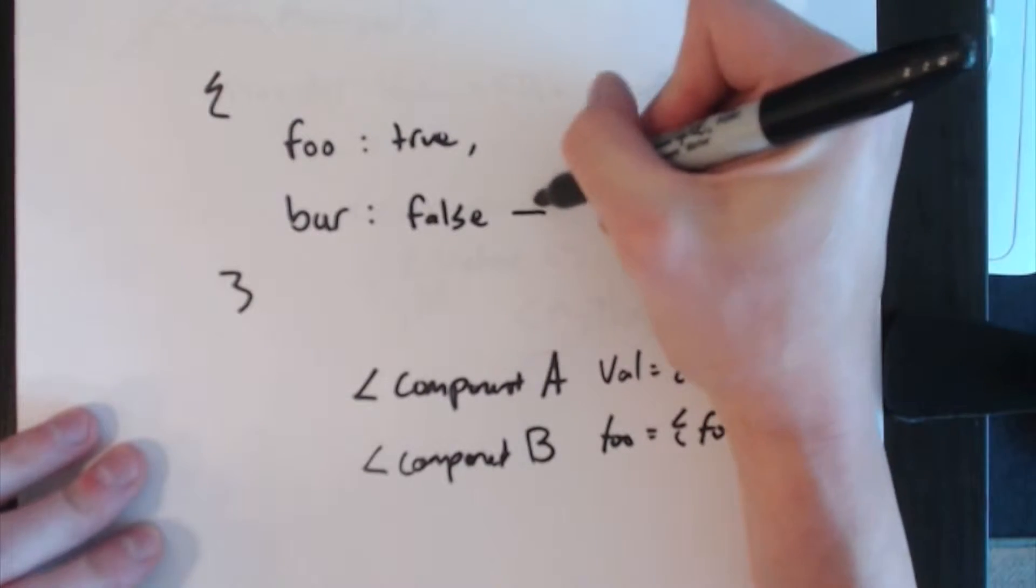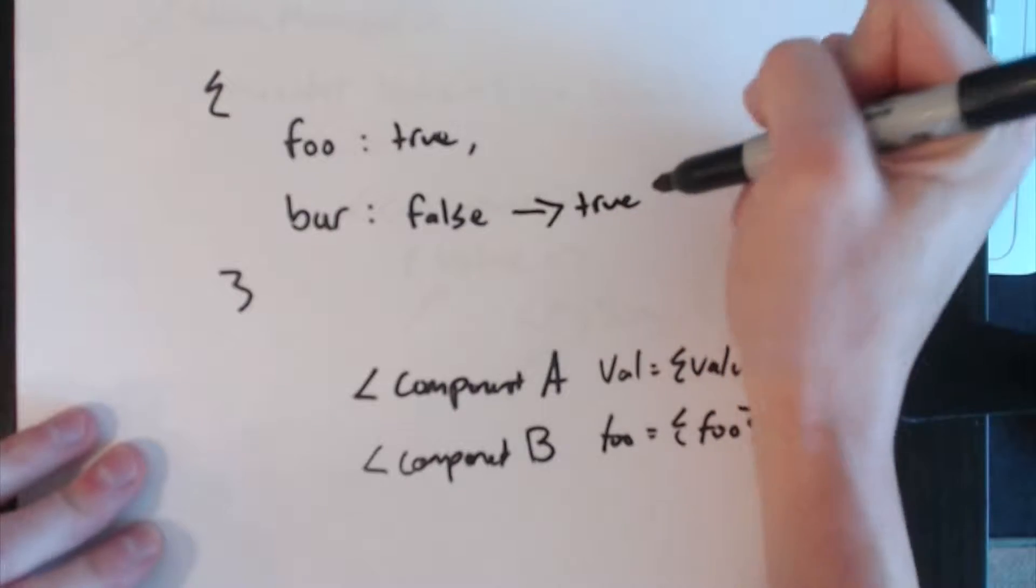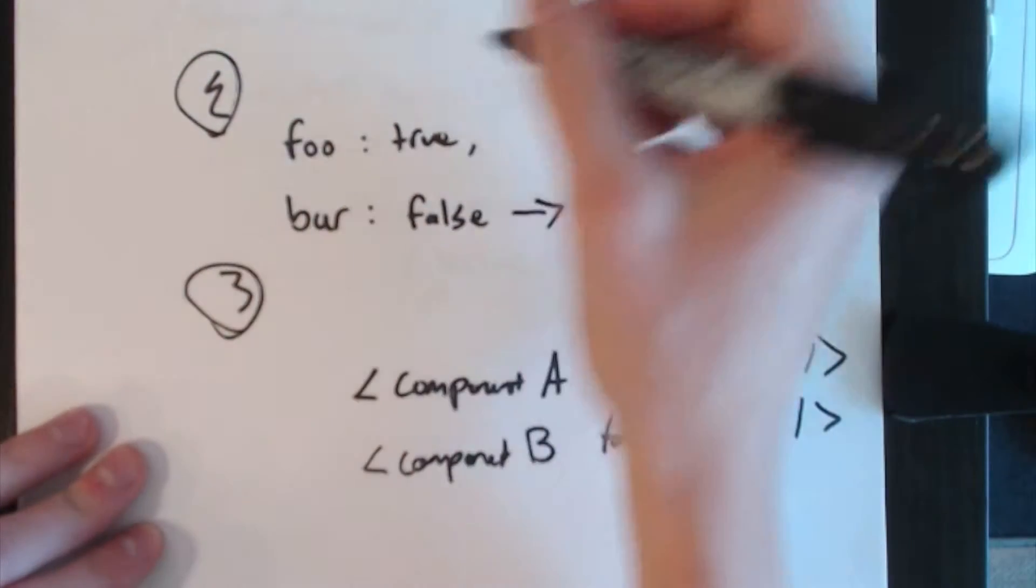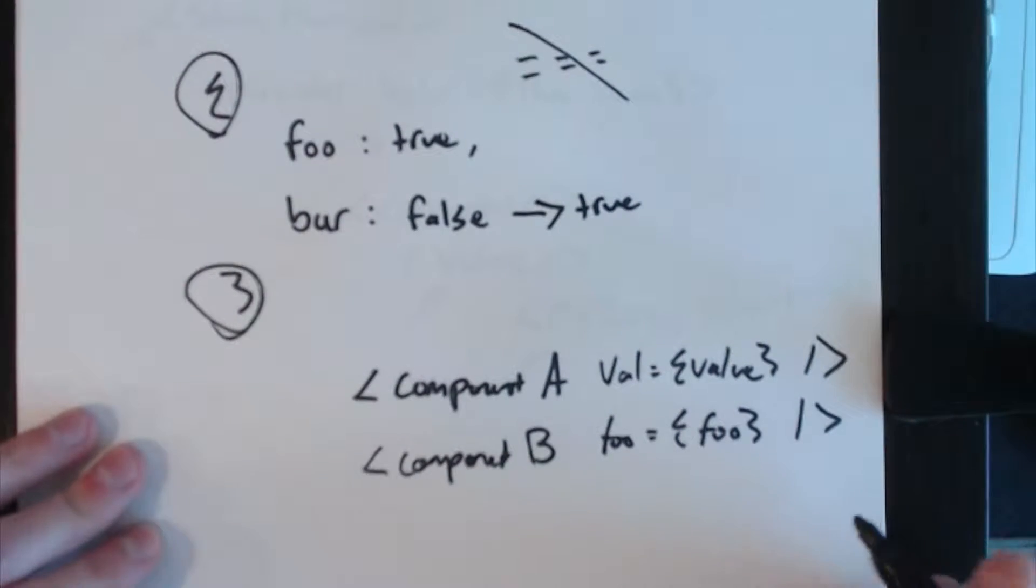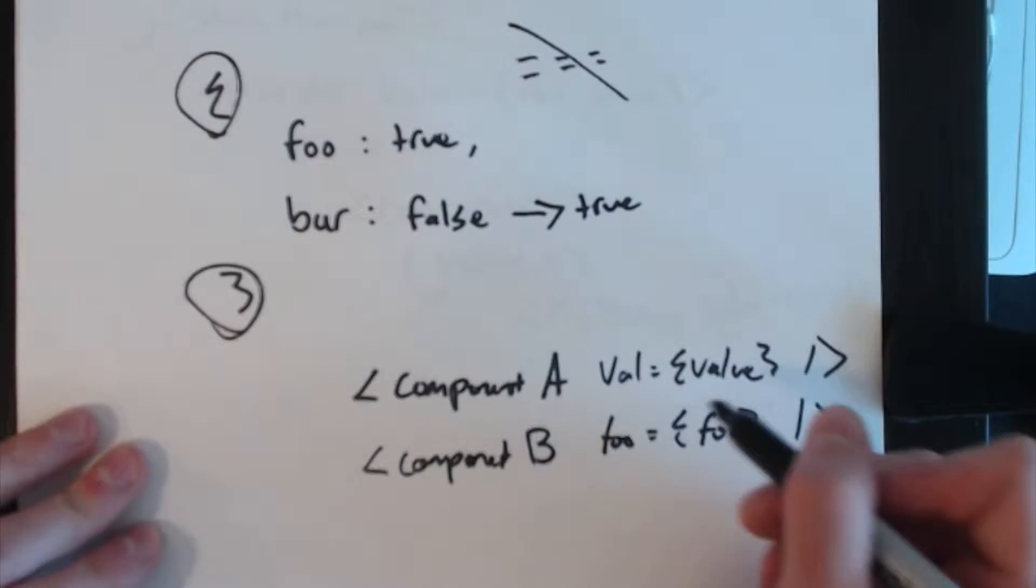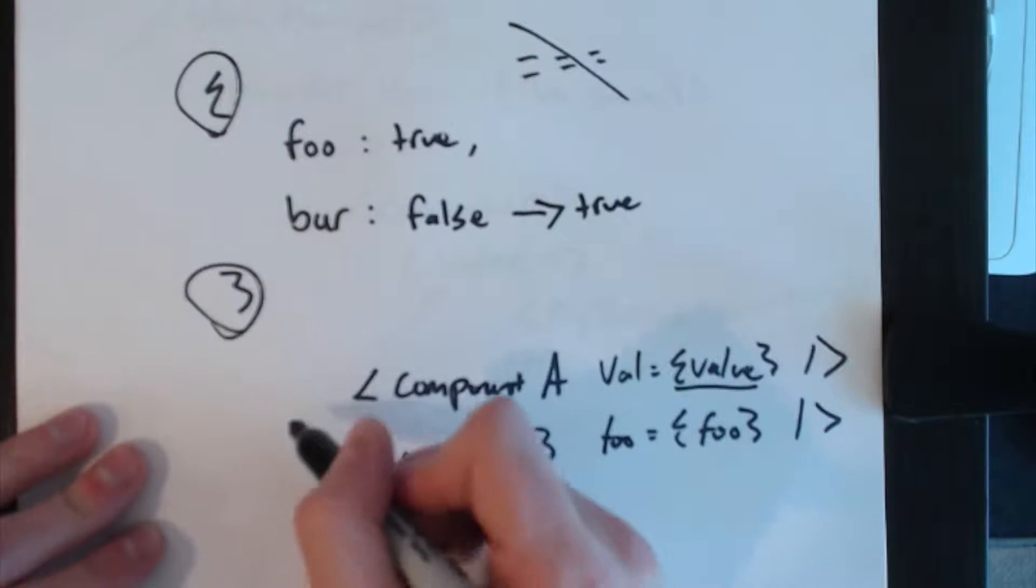So what's going to happen when we change bar on the context? That whole object is not going to be the same, right? The old object and the new object are not equal, so this value here is a new object.